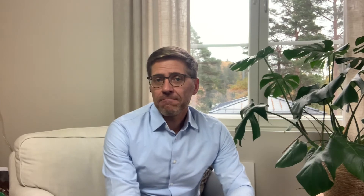Historically, the MAC address was always fixed, used as an identifier of the device and a persistent naming mechanism for the device. All devices used until lately these vendor-assigned MAC addresses by default. MAC could also be used to discover the manufacturer, the device model, and event type, which was encoded in the MAC address.